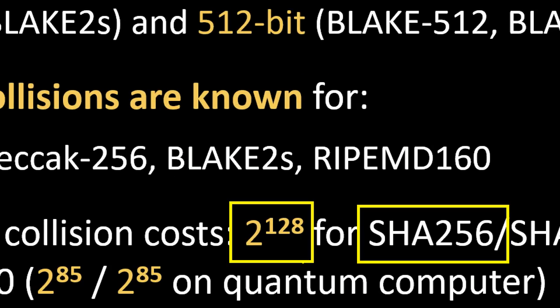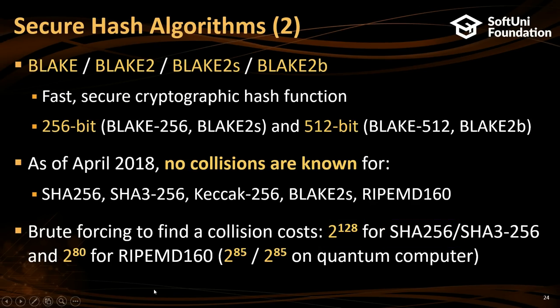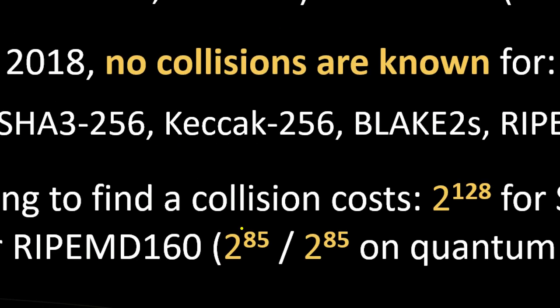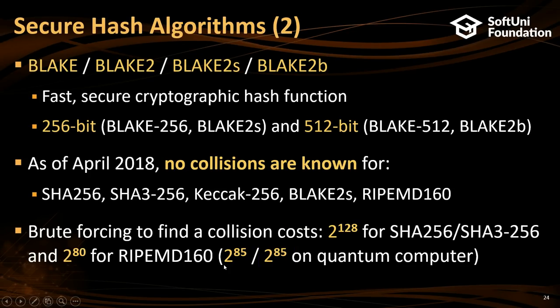To break SHA-256 you need this number of operations for the best known classical algorithm. To break the same on a quantum machine you need fewer operations — by N to the power of 1/3. So generally hash functions are quantum safe. You just increase the key size and everything is okay. But not so with elliptic curves.